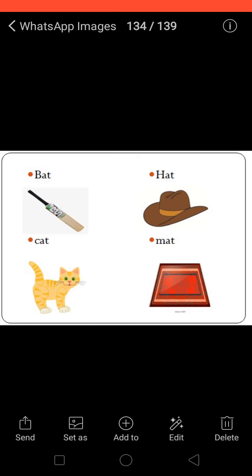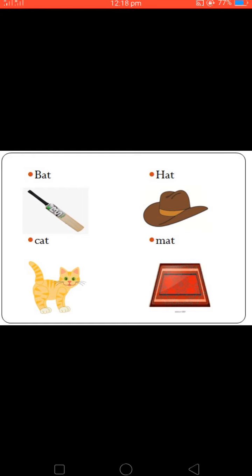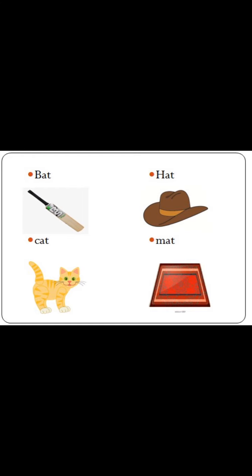How to read these words? Listen carefully. First picture: Bat. B-A-T, Bat. B makes the sound B, A makes the sound A, T makes the sound T. B-A-T, Bat.